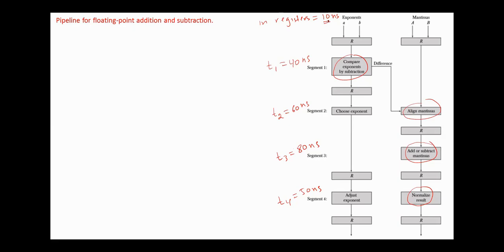In a pipeline system, the clock cycle should be chosen as the maximum value, 80 plus the delay in the registers, which is 90 nanoseconds.